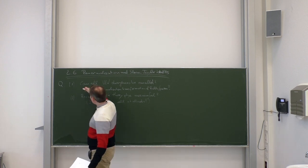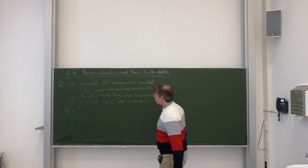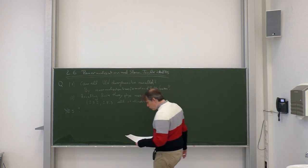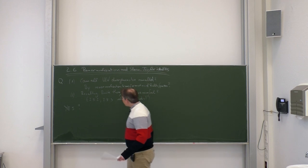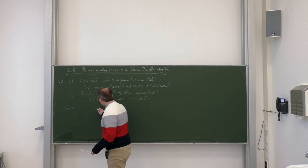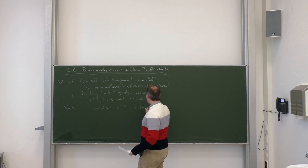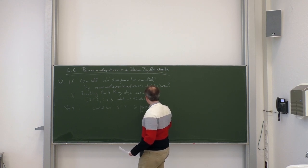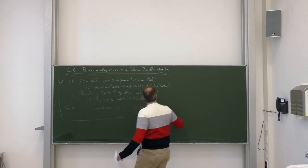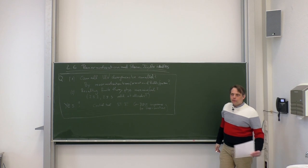That gives the main message: Yang-Mills theories make sense. The central tool is the Slavnov-Taylor identity, which is the reflection of BRST invariance on the level of Green functions. We have a clear plan for the next lectures: we will sketch the proofs and introduce all the necessary ingredients.